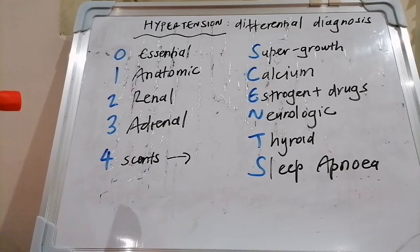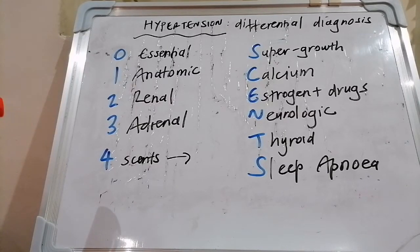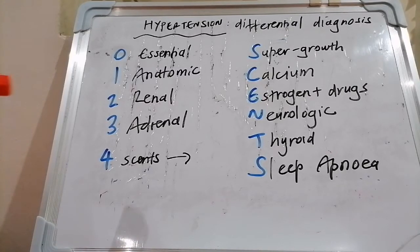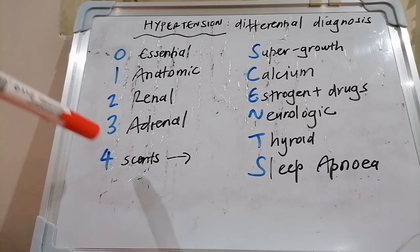Normally that enzyme prevents cortisol from activating the aldosterone receptor, but when it's overwhelmed — when you have too much licorice — it allows cortisol to activate that receptor, bringing in sodium and dumping potassium. The net result is hypertension with hypokalemia.